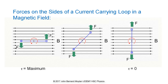When the plane of the loop is parallel to the magnetic field, as shown in the first diagram, the forces on the sides of the loop are at right angles to the plane of the loop so that the torque is at a maximum value. As the coil rotates, these forces are no longer acting at right angles to the plane of the loop, as can be seen in the middle diagram, so the torque on the coil decreases as the loop rotates.